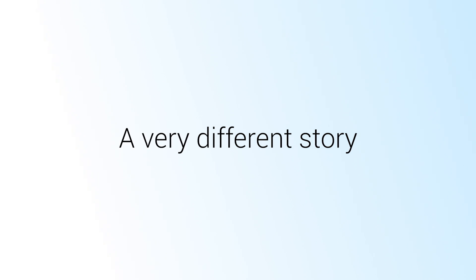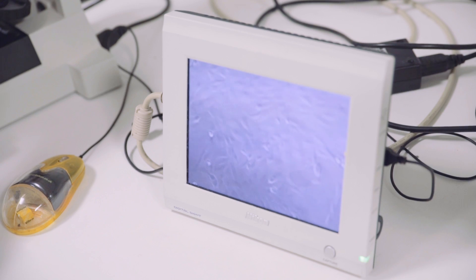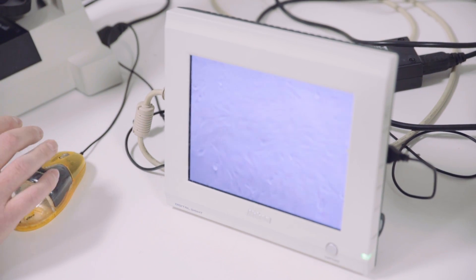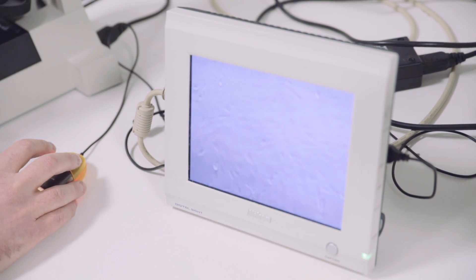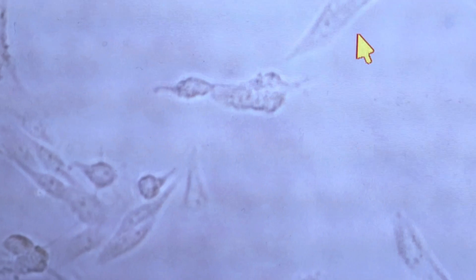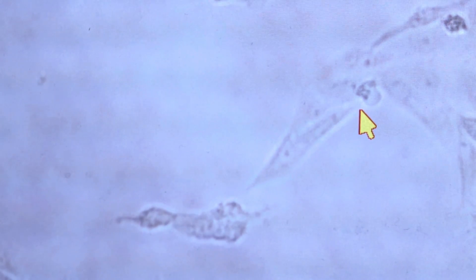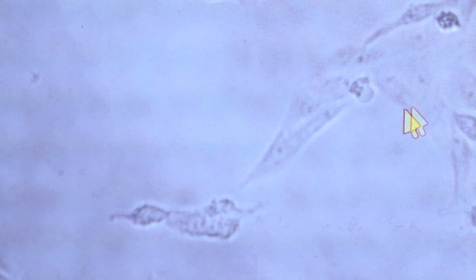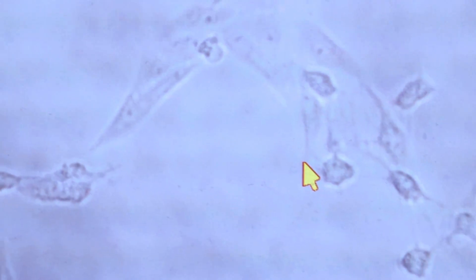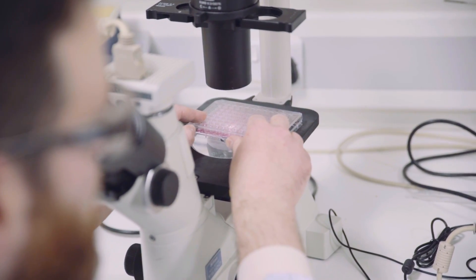We're using an inverted microscope to look at the monkey cells. This is one that we haven't treated with the difficile toxins. You can see all of these individual cells — they're not all the same shape, but together they're forming a layer over the surface, like they would in a natural kidney. This is what healthy cells look like.